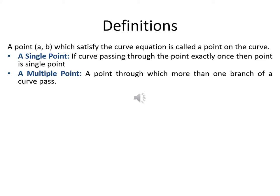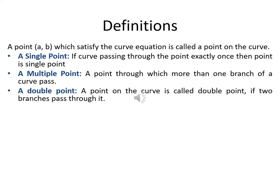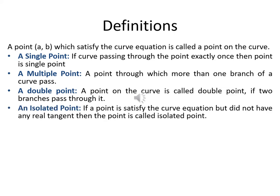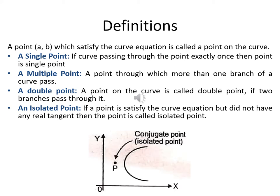Under multiple points we have the double point. If your curve passes through a point exactly two times, it is called a double point. The last type is an isolated point. If any point satisfies the curve equation but you are not getting any tangent at that point — meaning the point is part of the curve but the curve will not pass through it — then it is an isolated point.